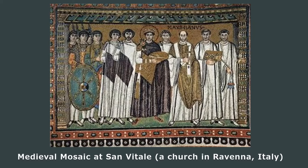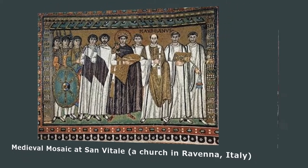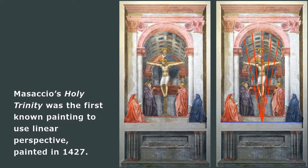After artists started using Brunelleschi's method of linear perspective, paintings appeared more dynamic and realistic. Like this one by Masaccio. This is the first known painting to use linear perspective.